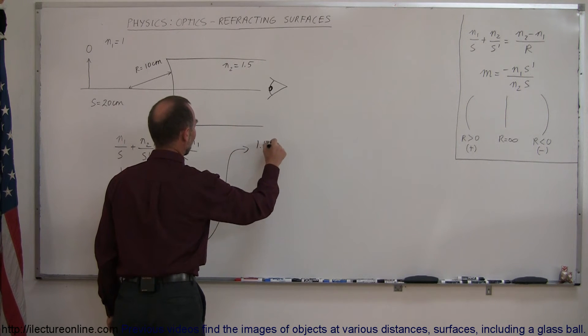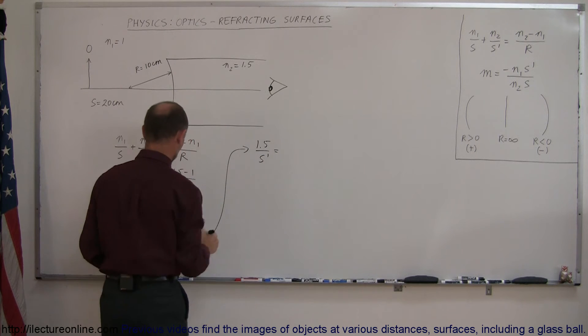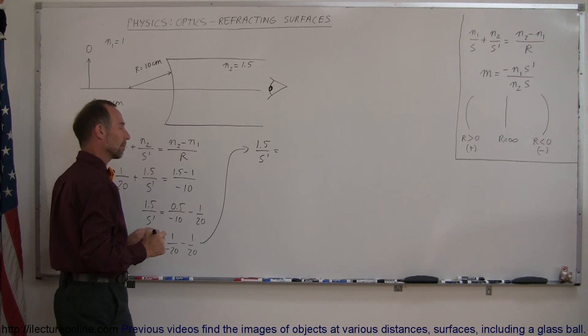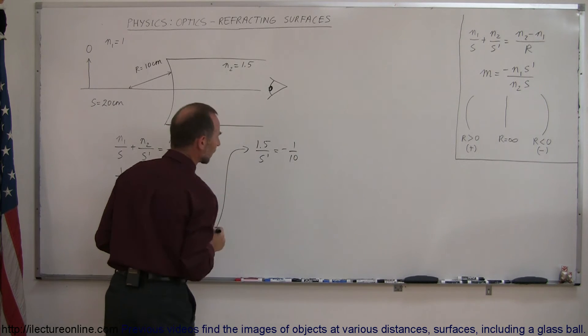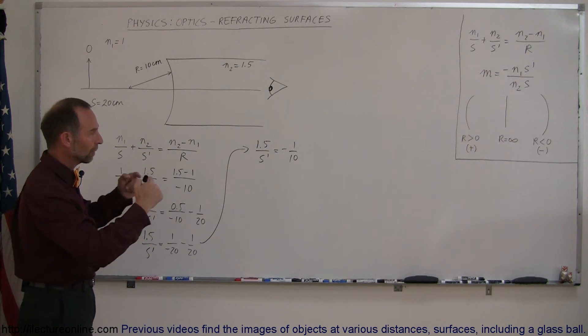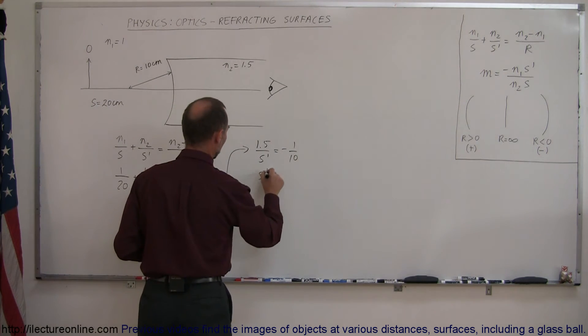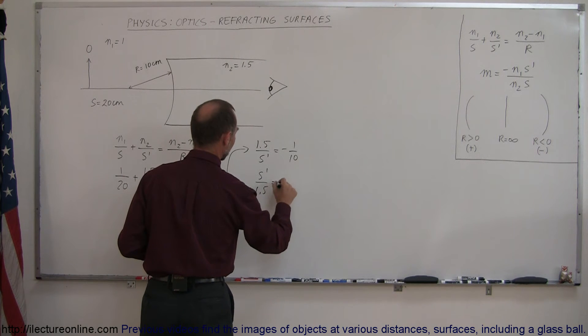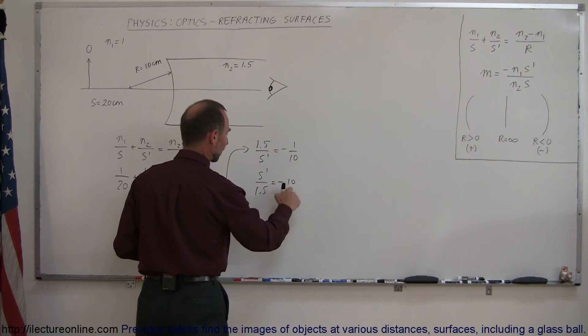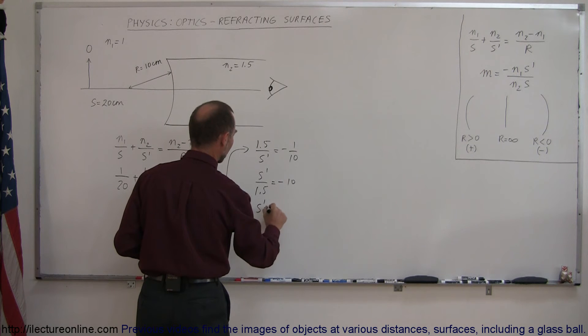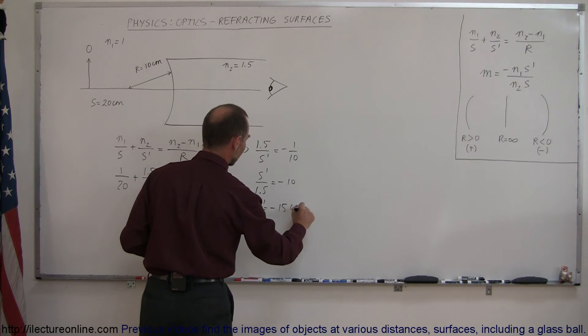So we have 1.5 over S prime, which is equal to minus 1 over 20th, minus 1 over 20th, that's minus 1 over 10. And then we flip the equation around. So we have S prime over 1.5 is equal to minus 10. Then multiply the 1.5 times that, we get S prime is equal to minus 15 centimeters.